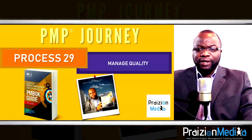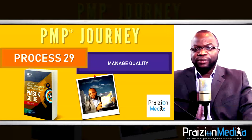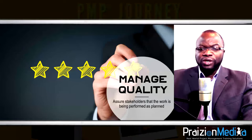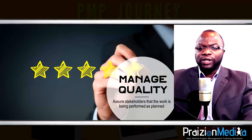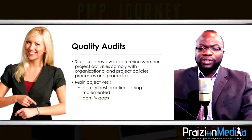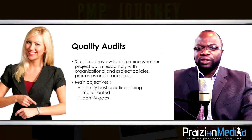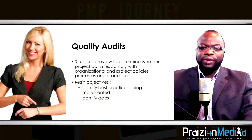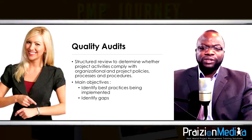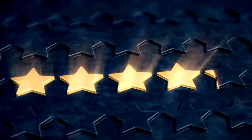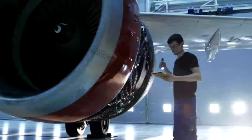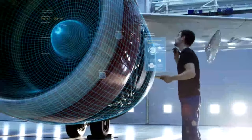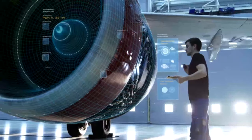Process 29: Manage quality. The project manager and team should be checking the process and ensuring that work is going according to plan and being carried out the right way. Third-party quality audits are also a reliable means of conducting this process. Questions asked include: what are we doing well, what aren't we doing so well, and what can we reuse on the project or in the firm?